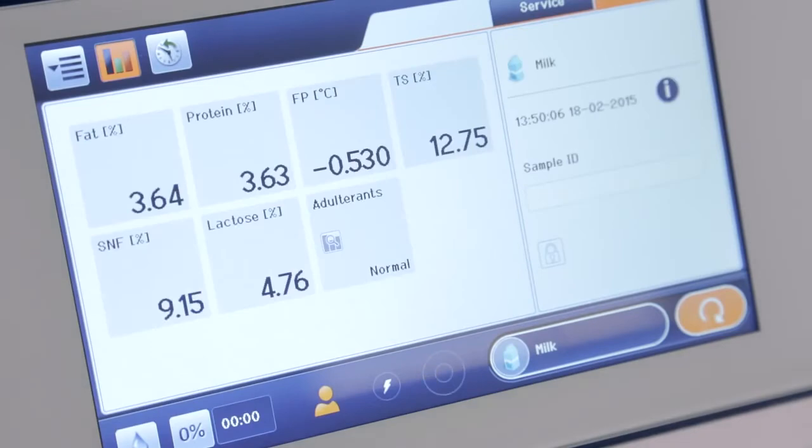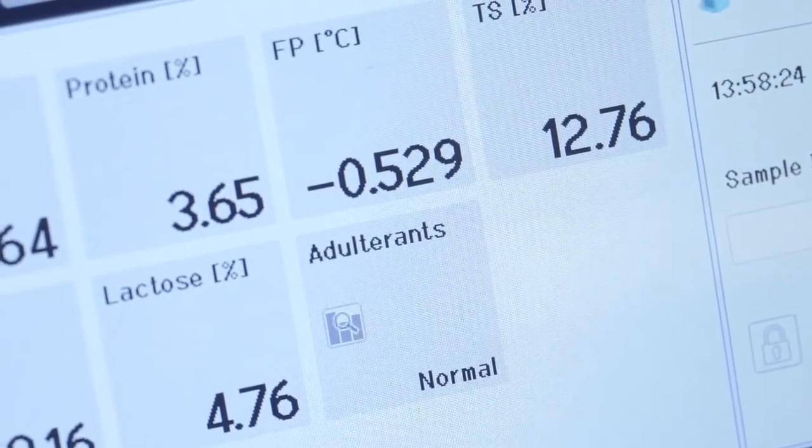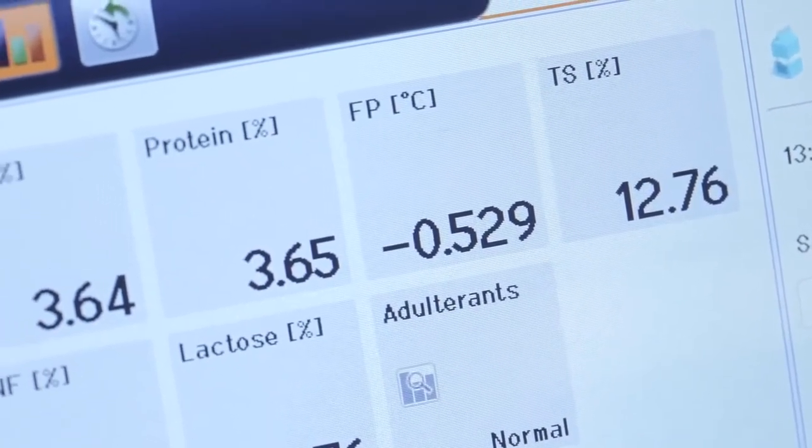Adulteration screening options allow you to check milk for abnormalities such as known or unknown adulterants and added water.